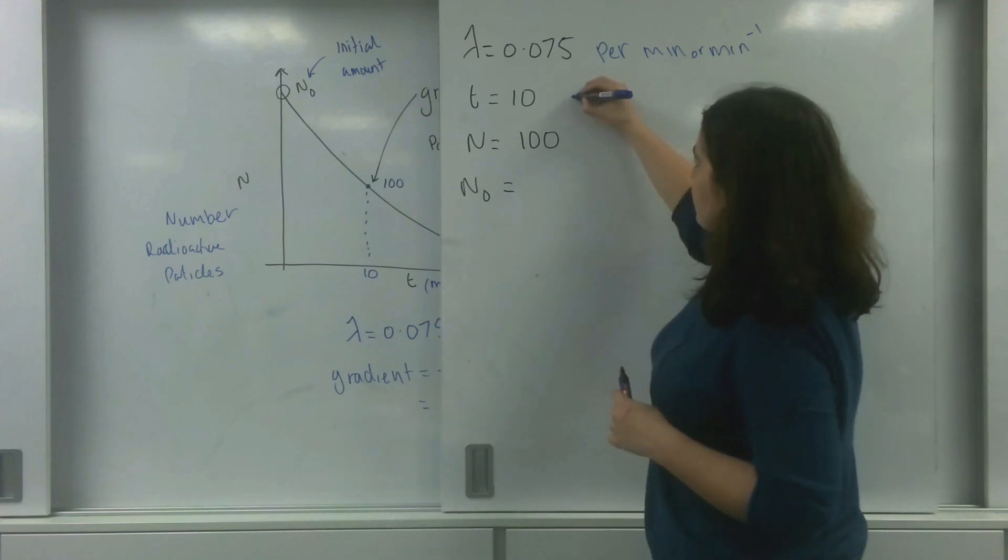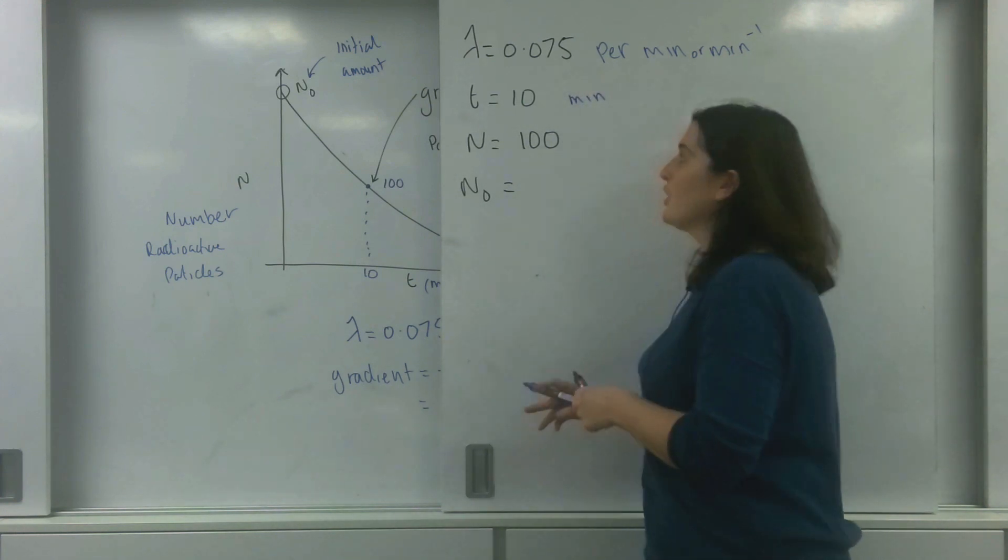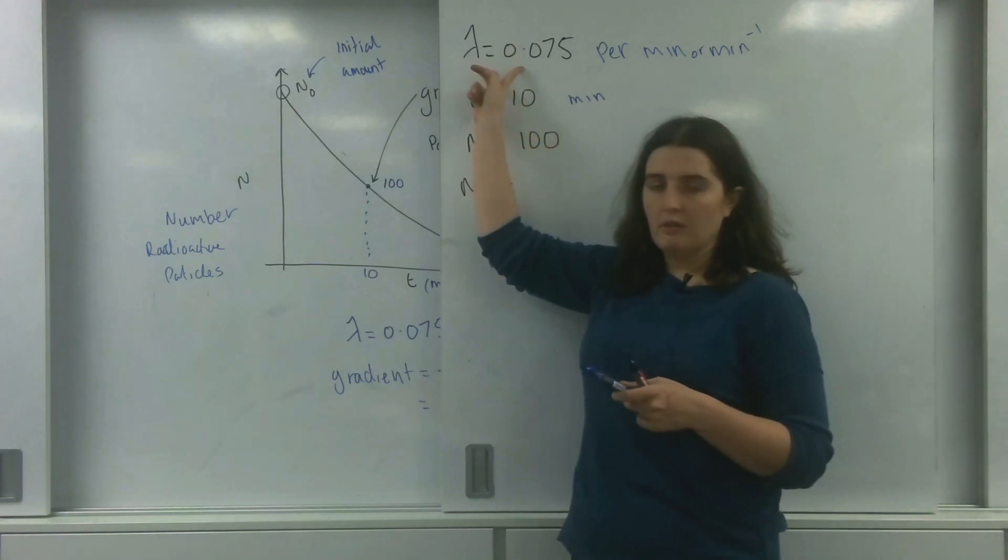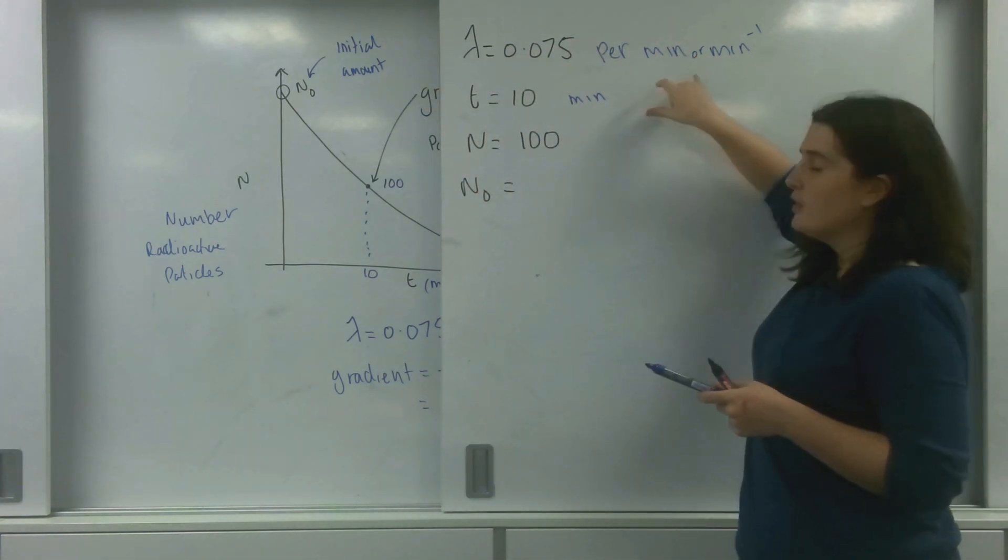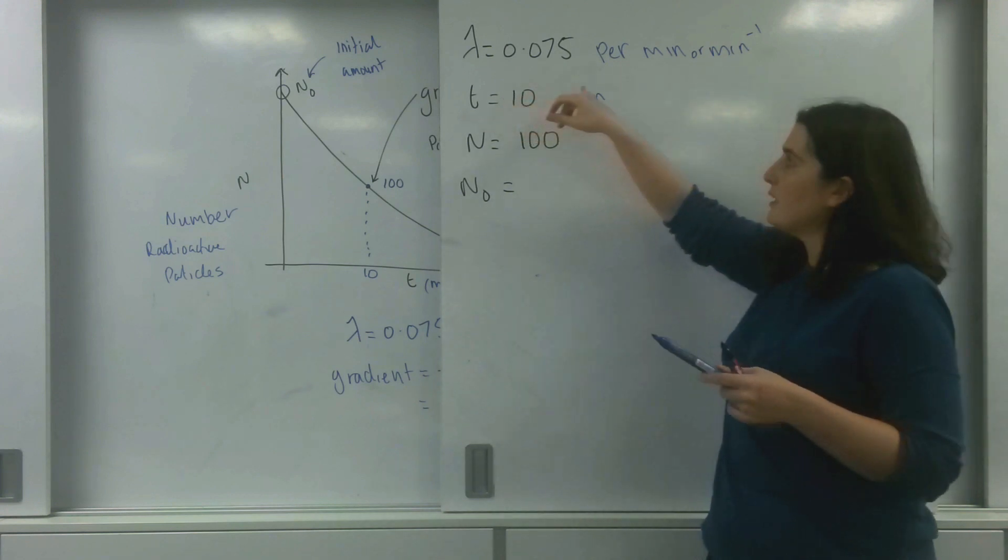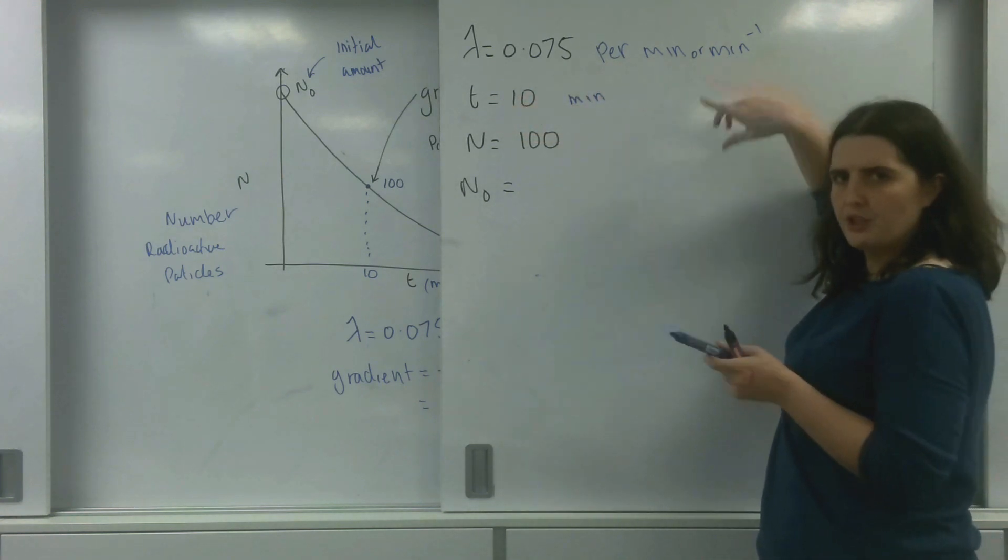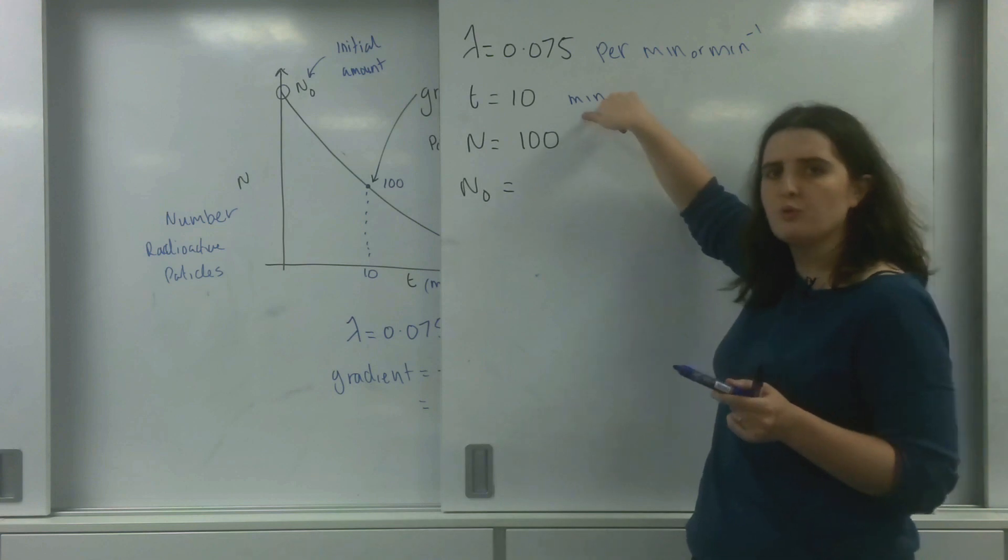My time is 10 minutes. And it is very important that your decay constant and your time have the same time span. So if you're going to use years, your decay constant is in years. If you're going to use seconds, your decay constant must also be in seconds.